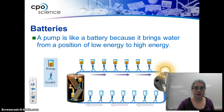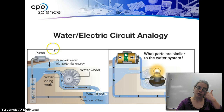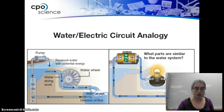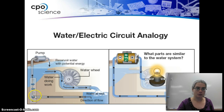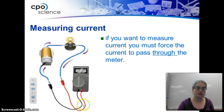Batteries act like a pump. In the water wheel analogy: the pump is the voltage, the water doing the work is the current, the water wheel can be considered the resistance, and the direction of flow corresponds to whether you have an open or closed circuit. Make sure that is filled in your chart. To measure current, it has to pass through the meter — you need to create an open circuit and use the multimeter to carry the circuit through.